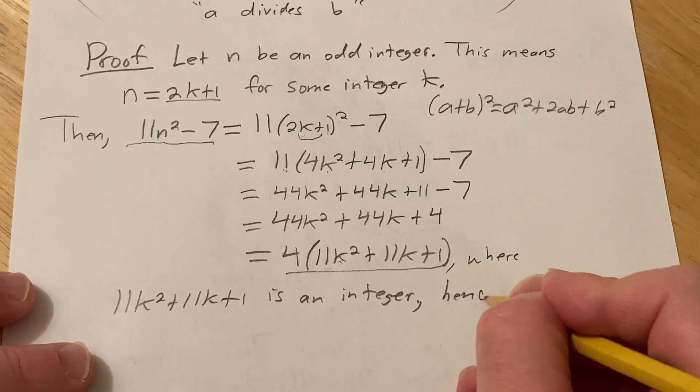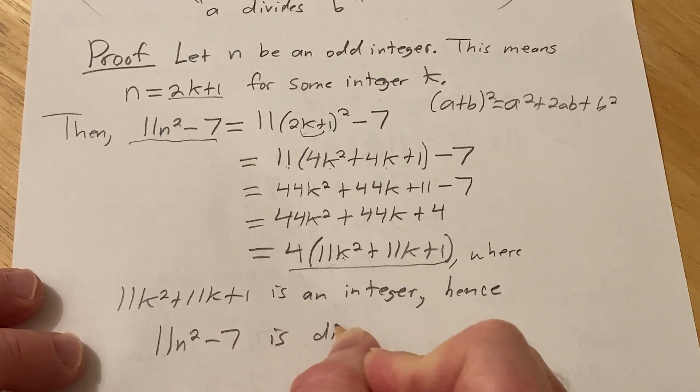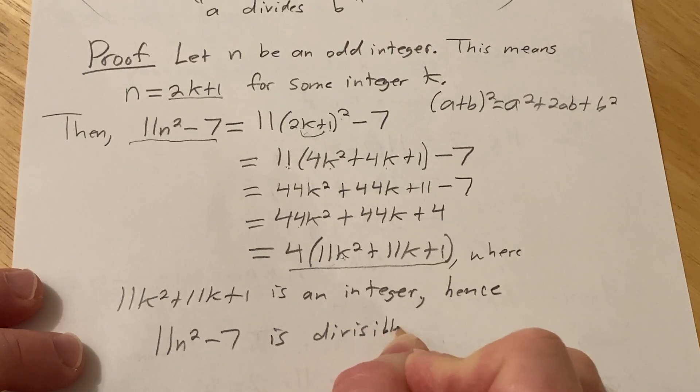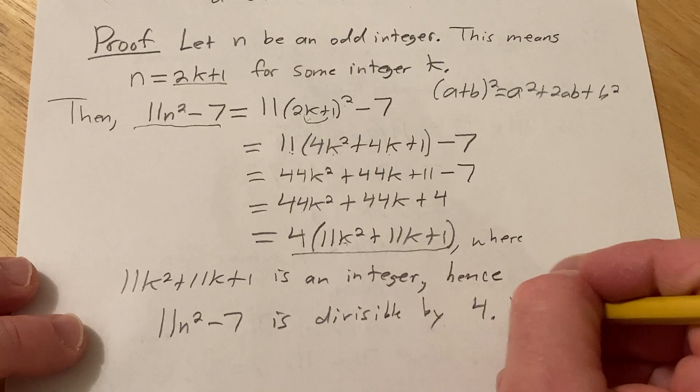Hence, 11n² - 7 is divisible by 4. Really nice. And that completes the proof. So the proof is complete.